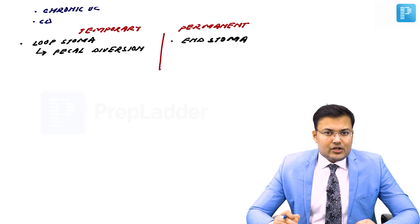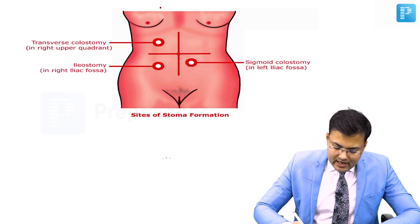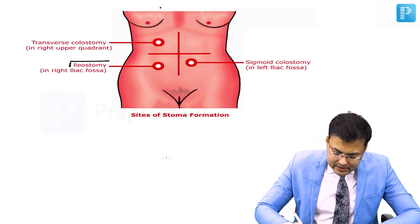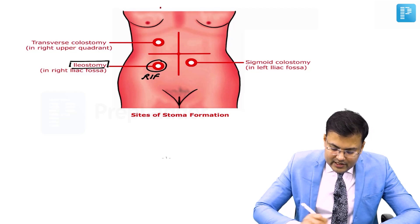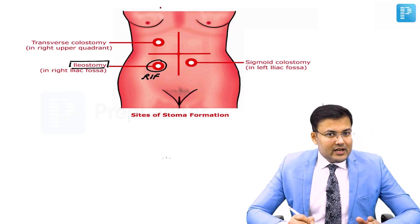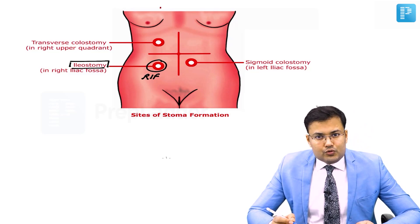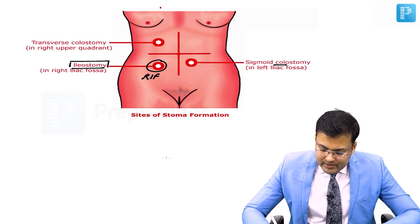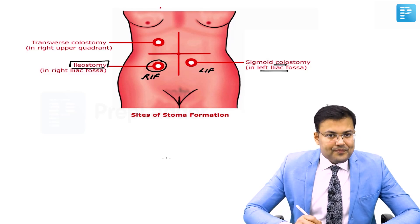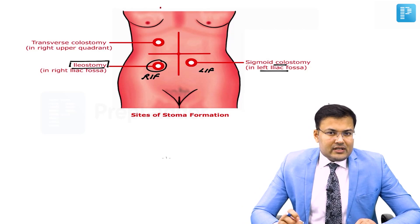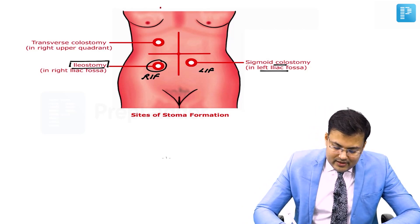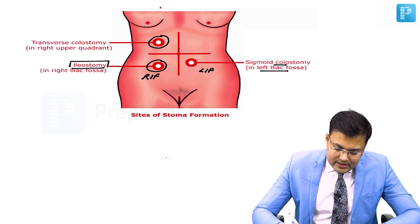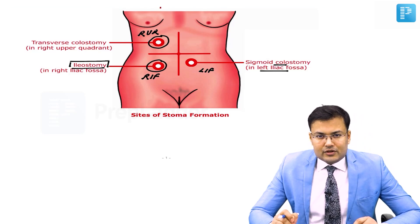What are the sites of stoma? Ileostomy is generally created in the right iliac fossa. Sigmoid colostomy, which is usually permanent as an end stoma, is created in the left iliac fossa. Transverse colostomy is generally temporary and is made in the right upper quadrant.